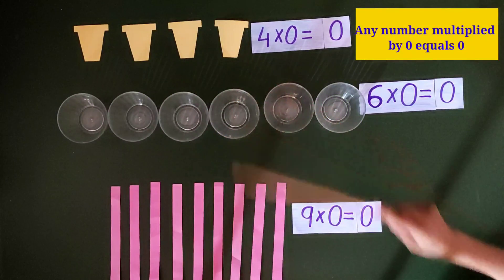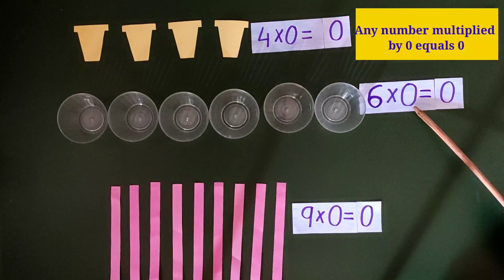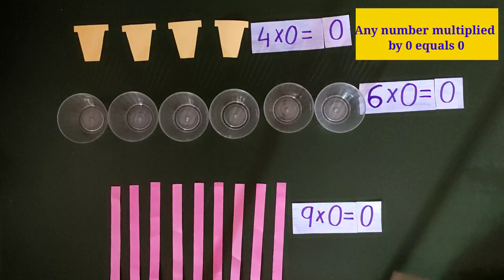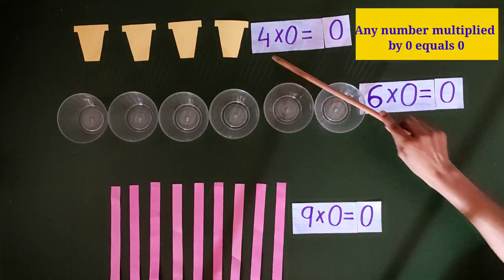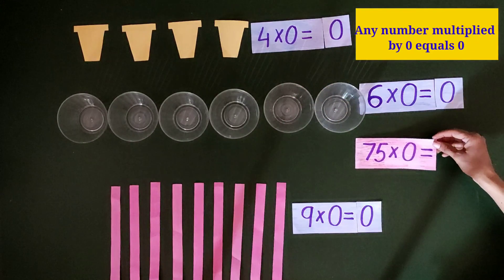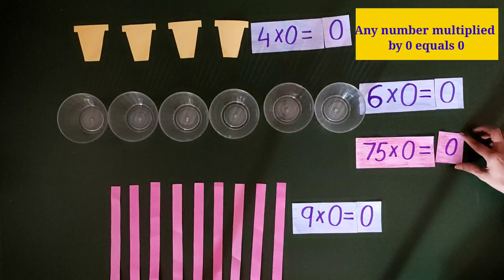From all these examples, we learn that when any number is multiplied by 0, the answer is 0 always. And this property of multiplication applies to all the numbers. Let's understand it with a 2 digit number. 75 multiplied by 0. What will be the answer? Yes, we get 0 as our answer.